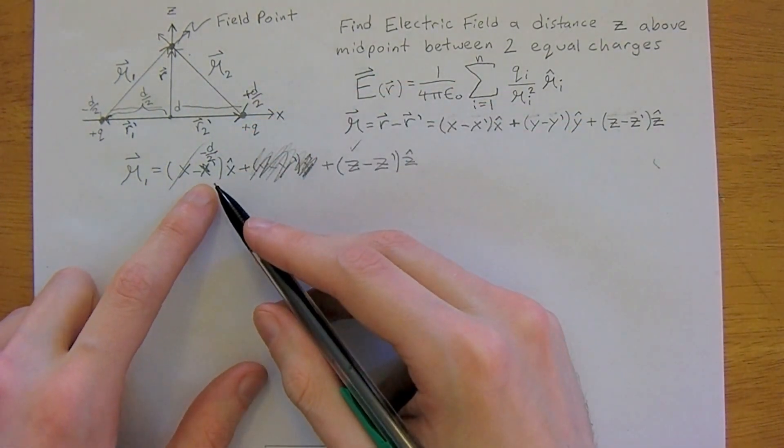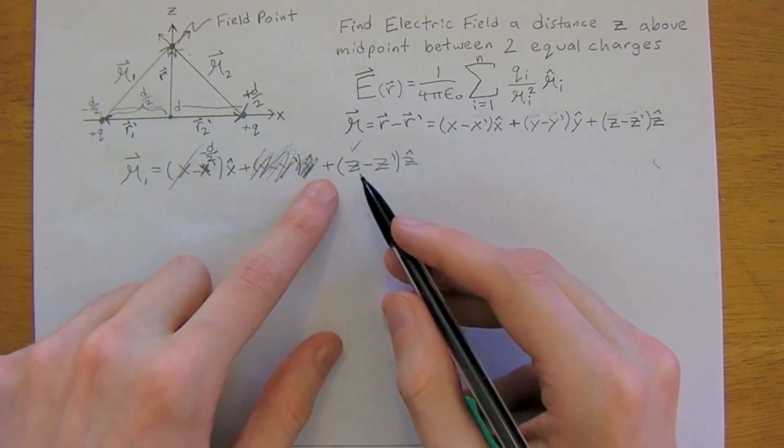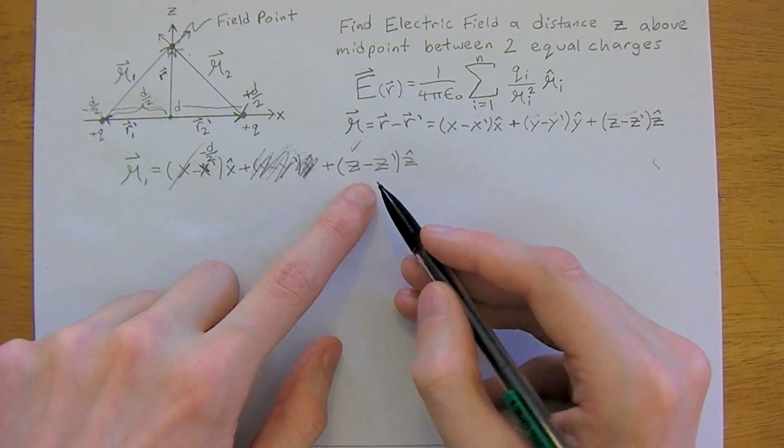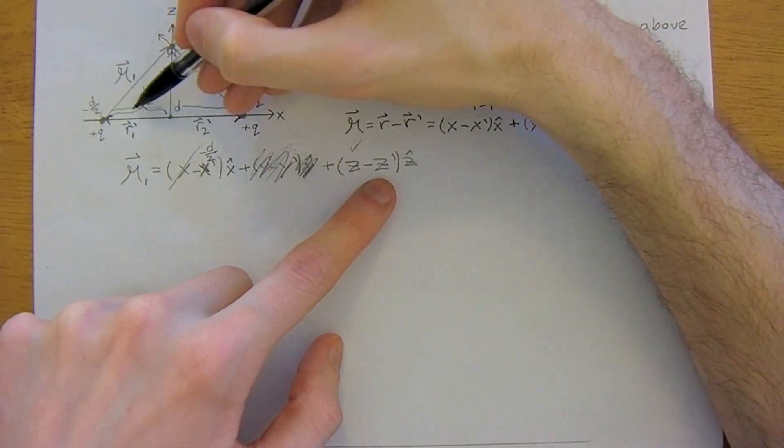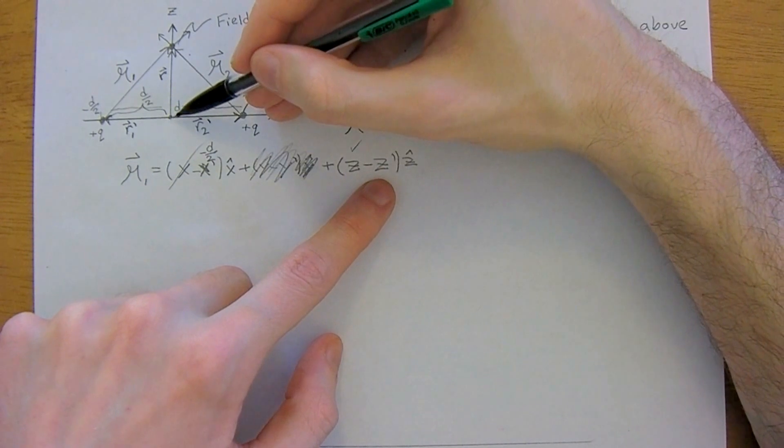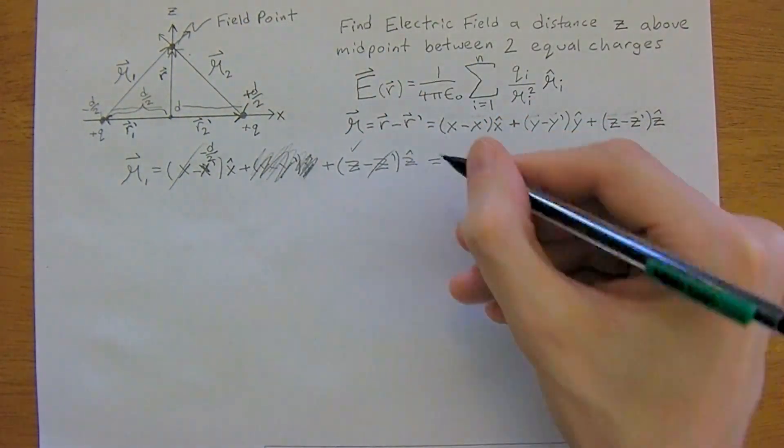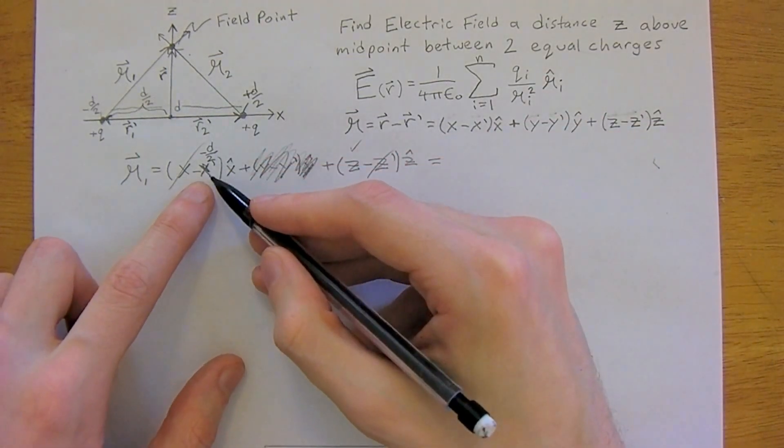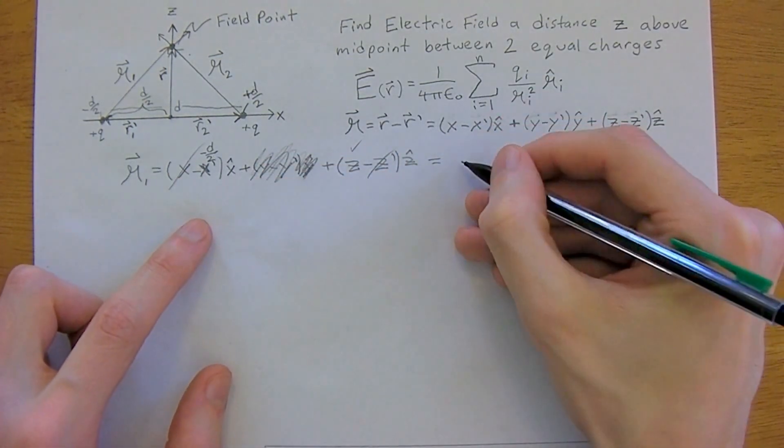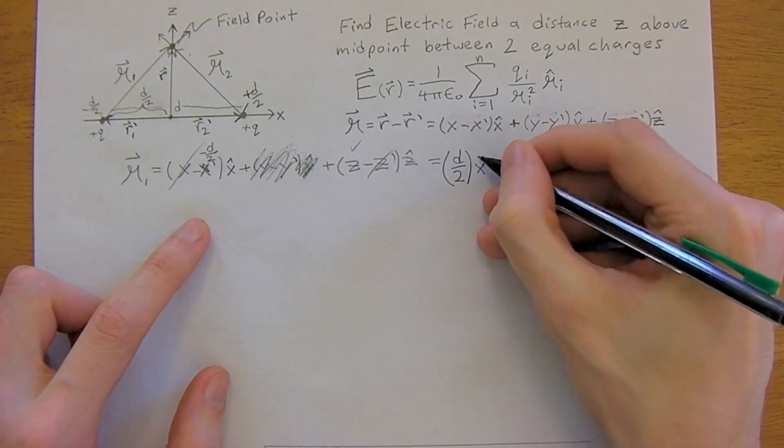So we have that set up. And remember these two negatives are going to cancel, making that positive. So now the z in the r1 prime. Is there any z? No, because they're at z equals 0. So we can cross that off. So r1 prime is equal to negative of negative d over 2. So we have a positive d over 2 in the x-hat direction. And we have a positive z in the z-hat direction.